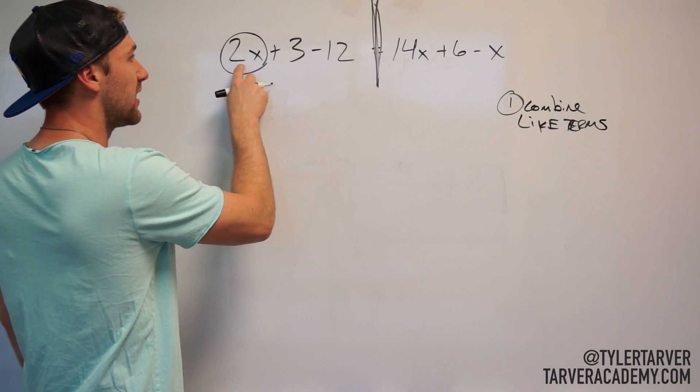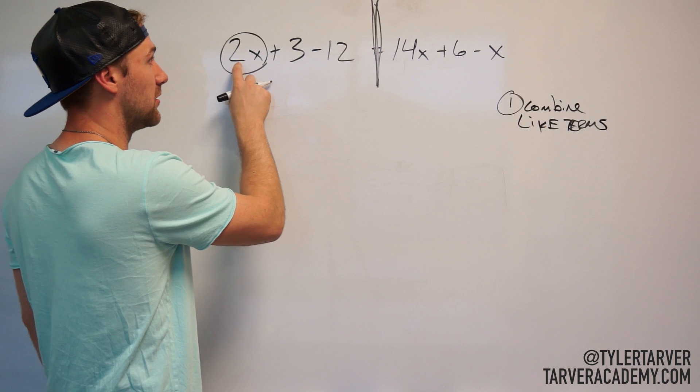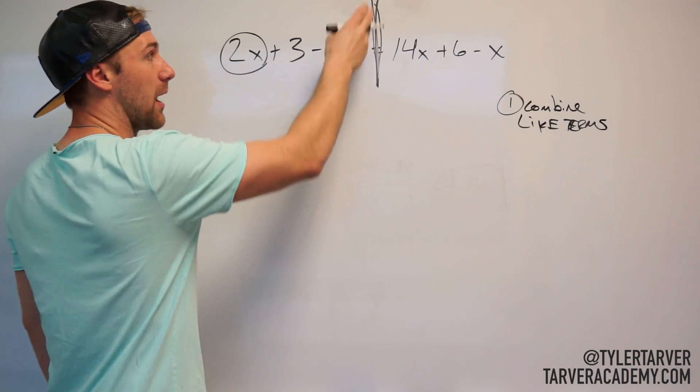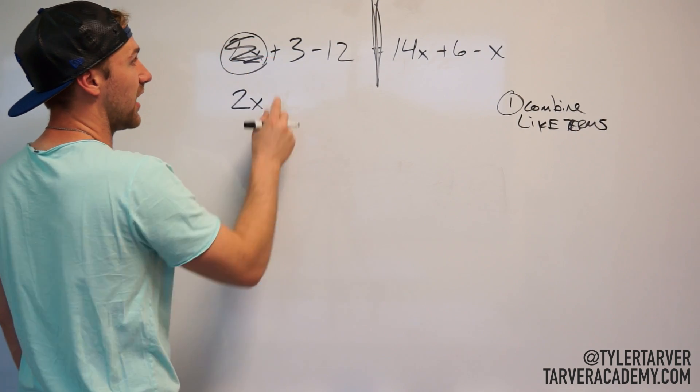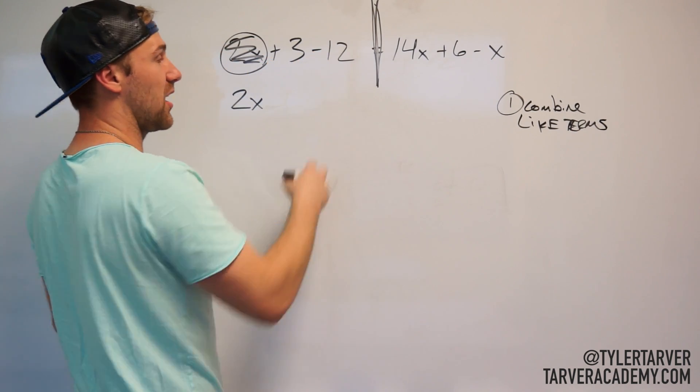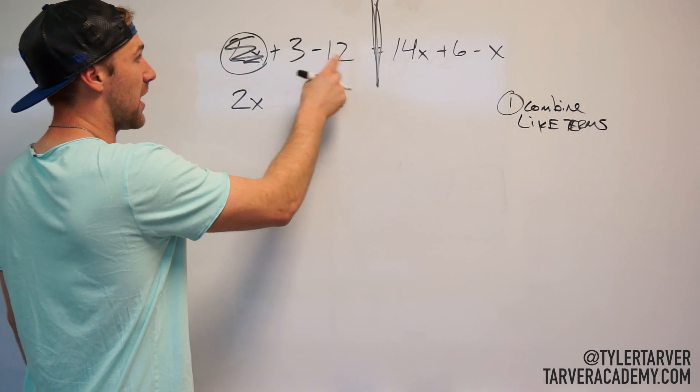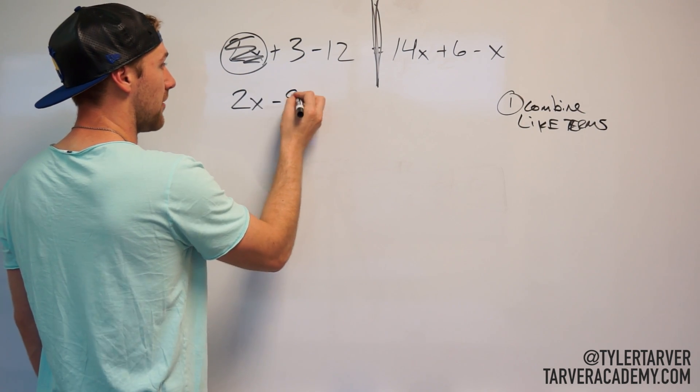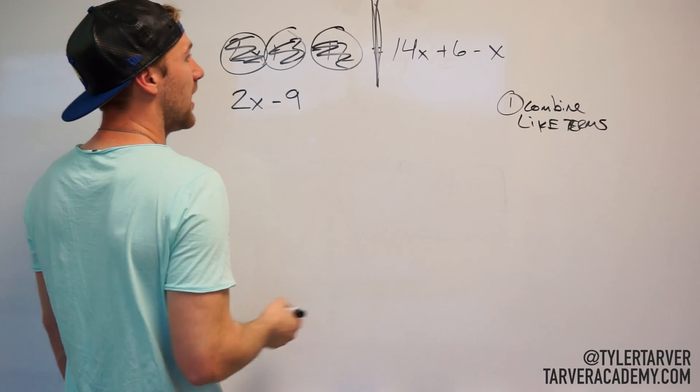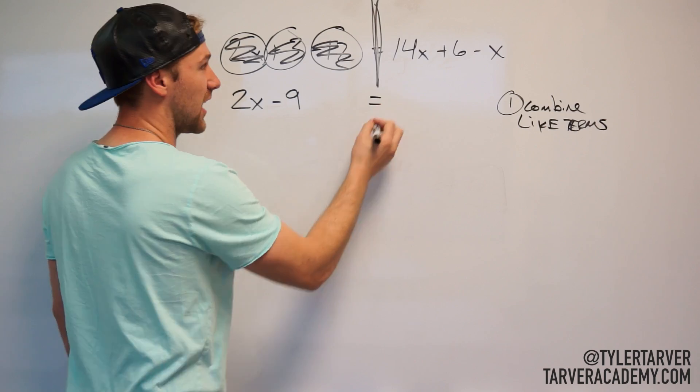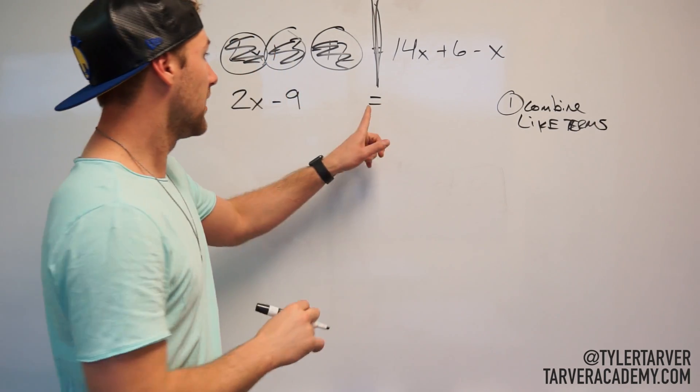So two x, I like to circle them because it makes me not skip anything. Can anything combine with two x? It has to have just one x with it for me to be able to combine. No, and I'm not crossing my line yet. So two x is good, I'm bringing it down. Positive three minus twelve, that's a regular math equation. Three minus twelve is negative nine. Bring down my equal sign. A lot of kids forget to bring down the equal sign—don't be that kid, bring down everything.